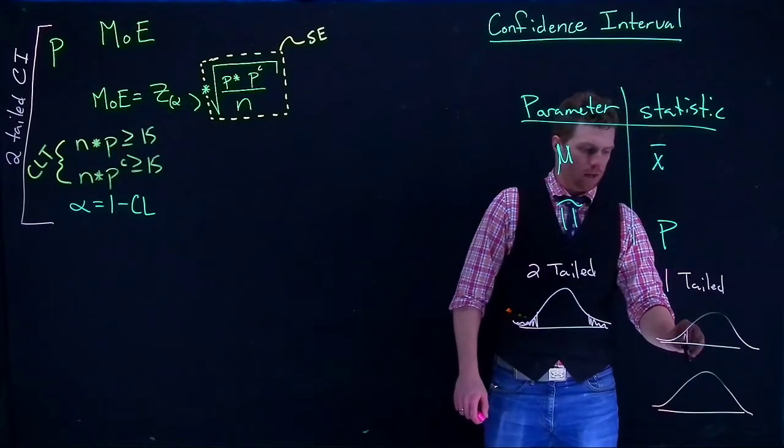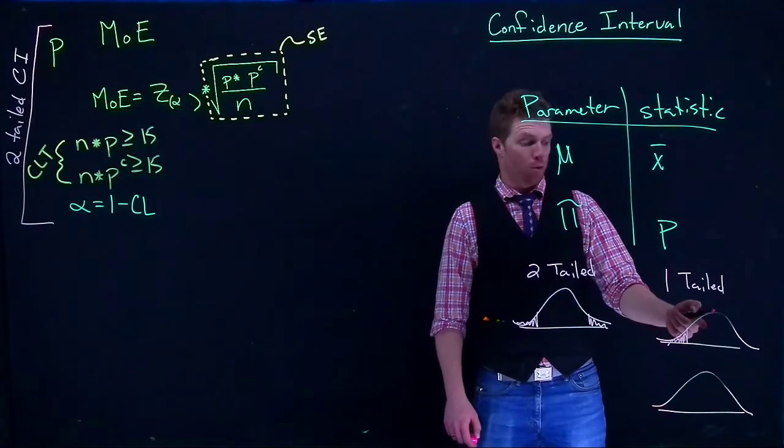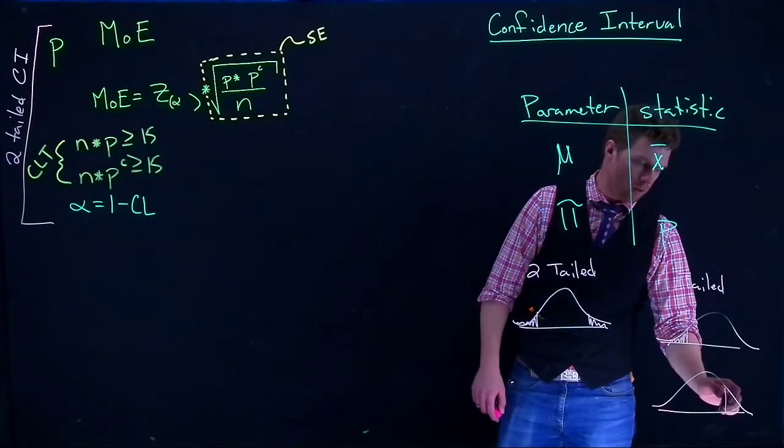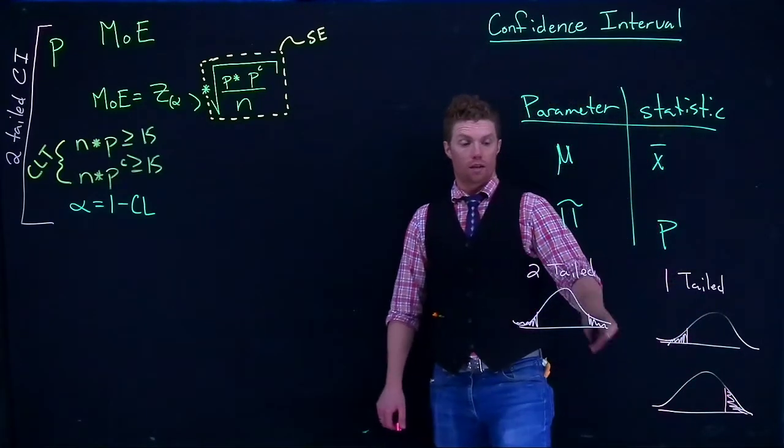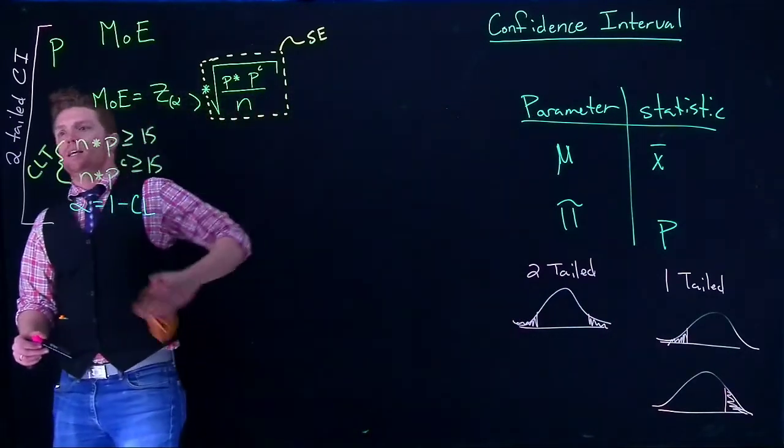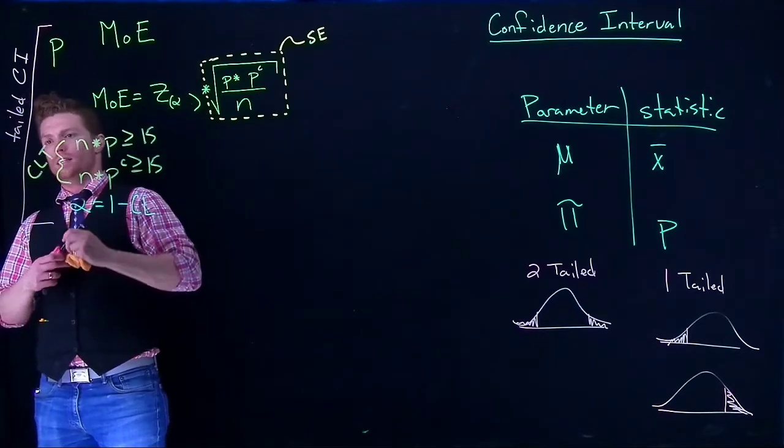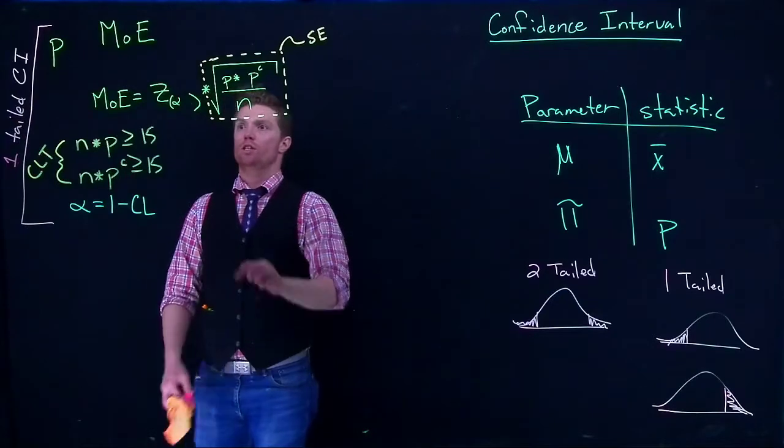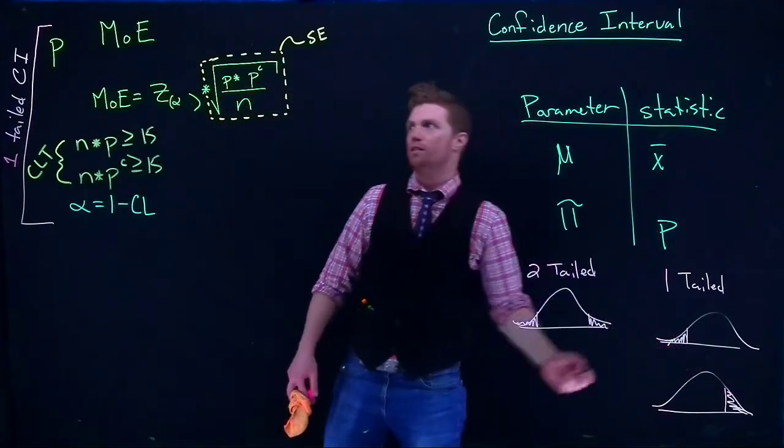And it just depends on what the problem is asking for. We could be asking that some value, the mean of the proportion, is at least some value. And the other one is that we're confident that it's no more than some value. So we've got one-tails, we've got two-tails. If we're in a one-tailed situation, the only thing that we have to change is we don't divide alpha by two because we're throwing all of the error to just one side.